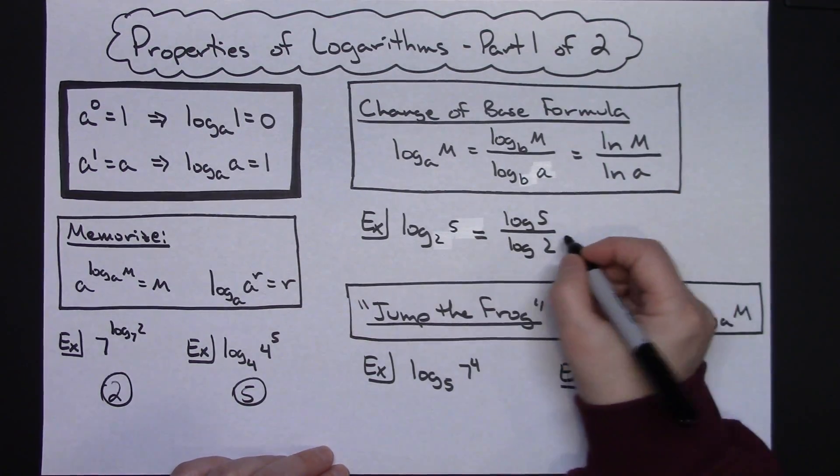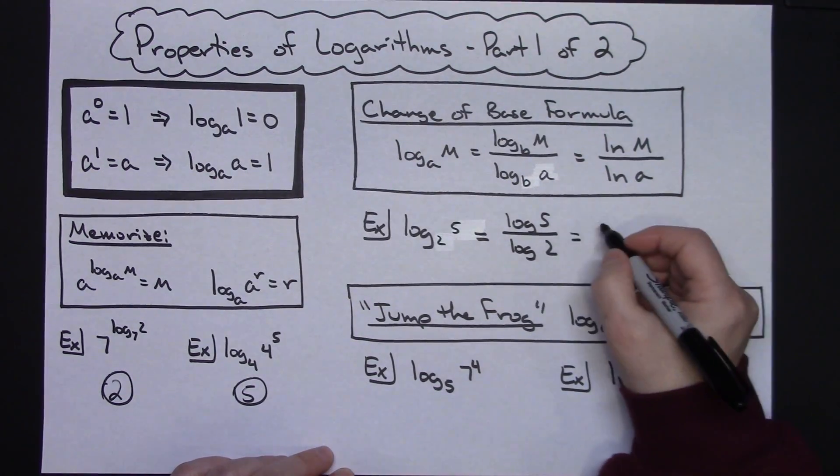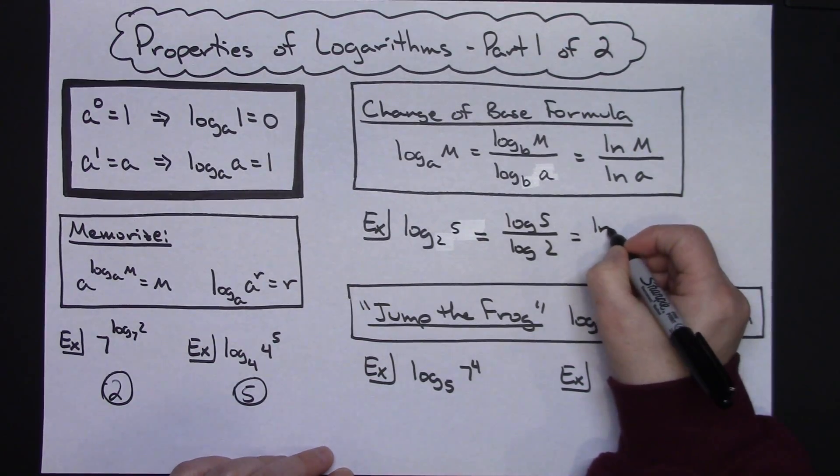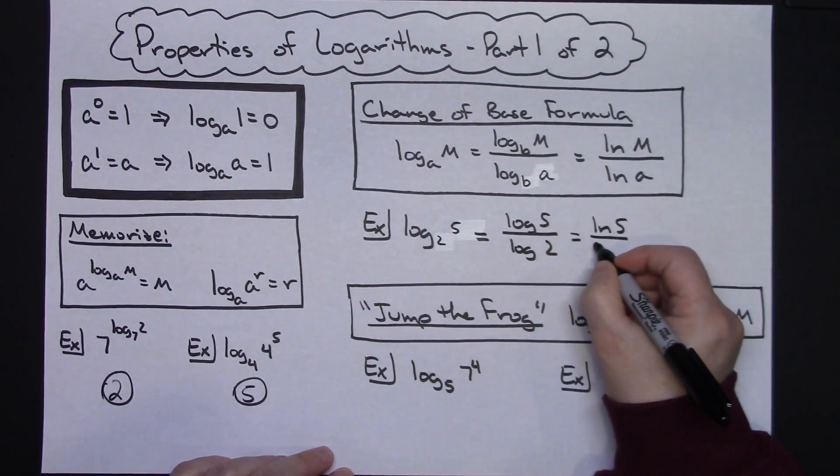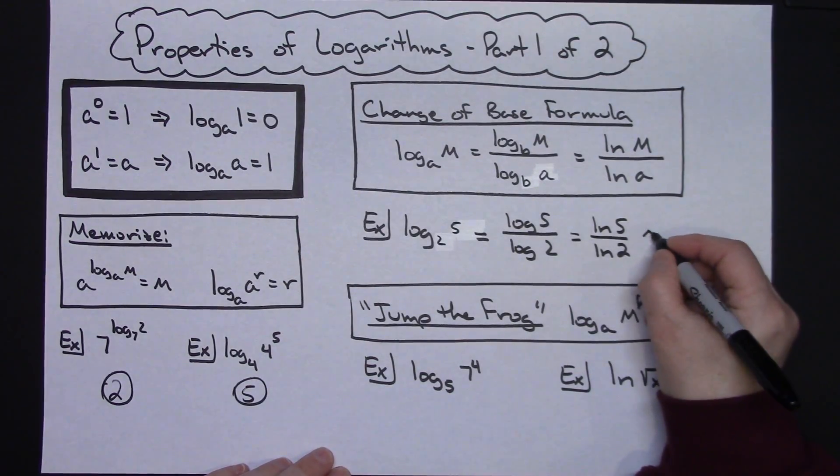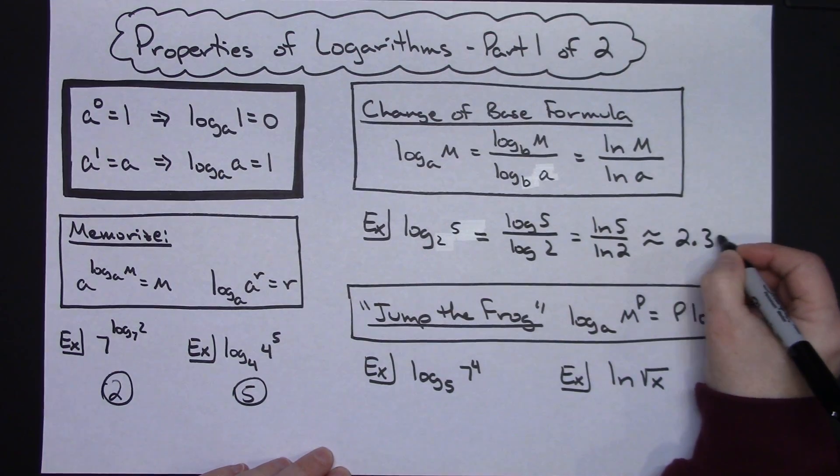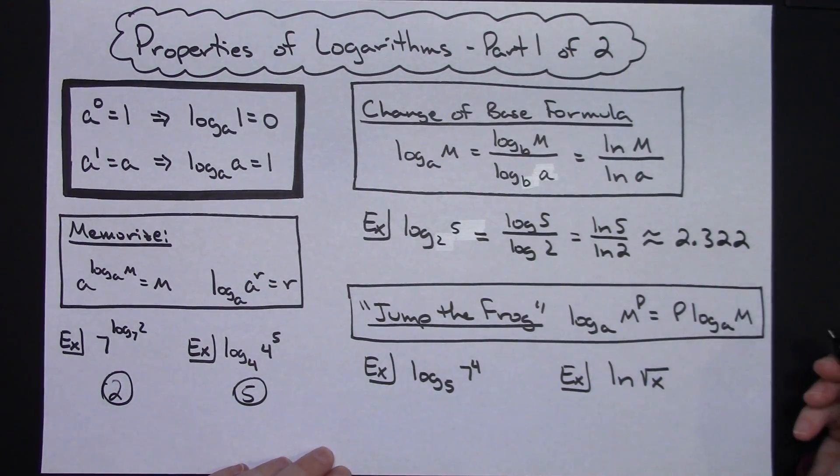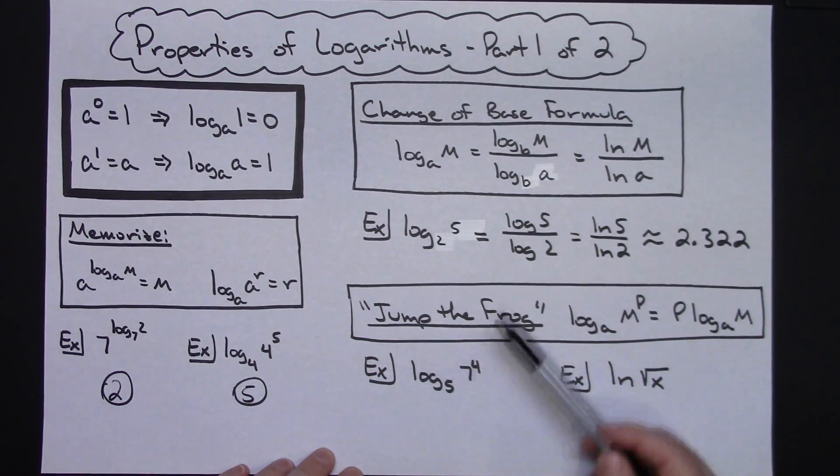I could have also chose instead of the log, I could have chose natural log. I could have went the natural log of five over the natural log of two. Putting both of those in the calculator, you would say that you would get an approximation of 2.322. Just a quick short way if you've got a calculator of how you can evaluate that using the change of base formula.